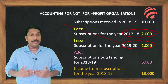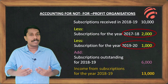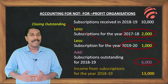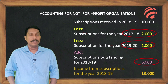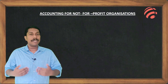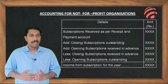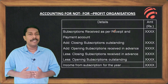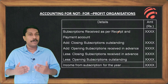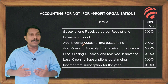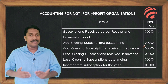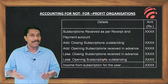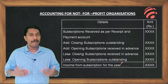The advances are the closing advances, and the outstanding is the closing outstanding. The subscription received during the year, plus closing outstanding, plus opening advance — minus opening outstanding and closing advance — gives the subscription to be transferred to the income and expenditure account. This is the format.